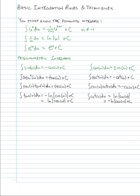The integral of sec(u)tan(u) is sec(u) + C, because the derivative of sec(u) is sec(u)tan(u). The integral of csc(u)cot(u) is −csc(u) + C, because the derivative of csc(u) is −csc(u)cot(u). Again, these come from being familiar with differentiation rules.